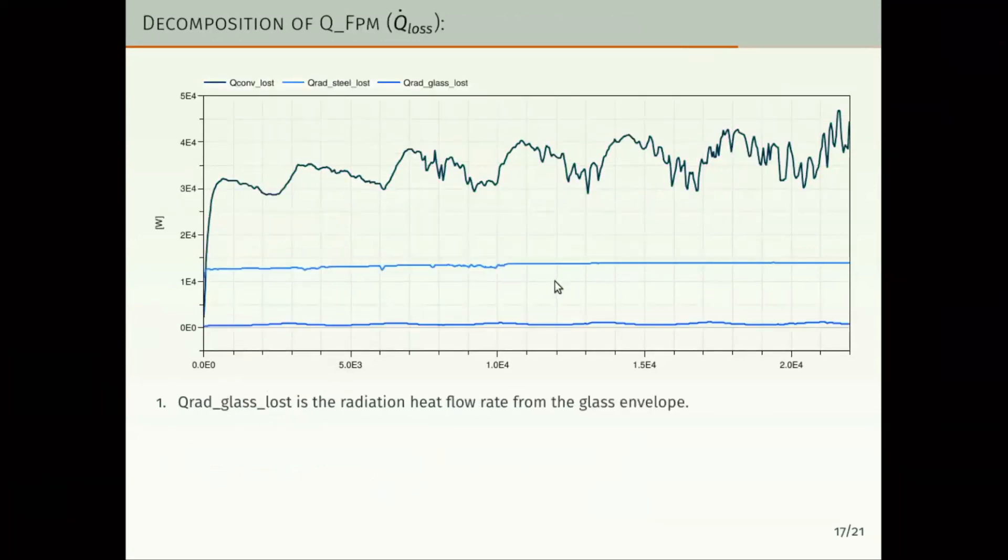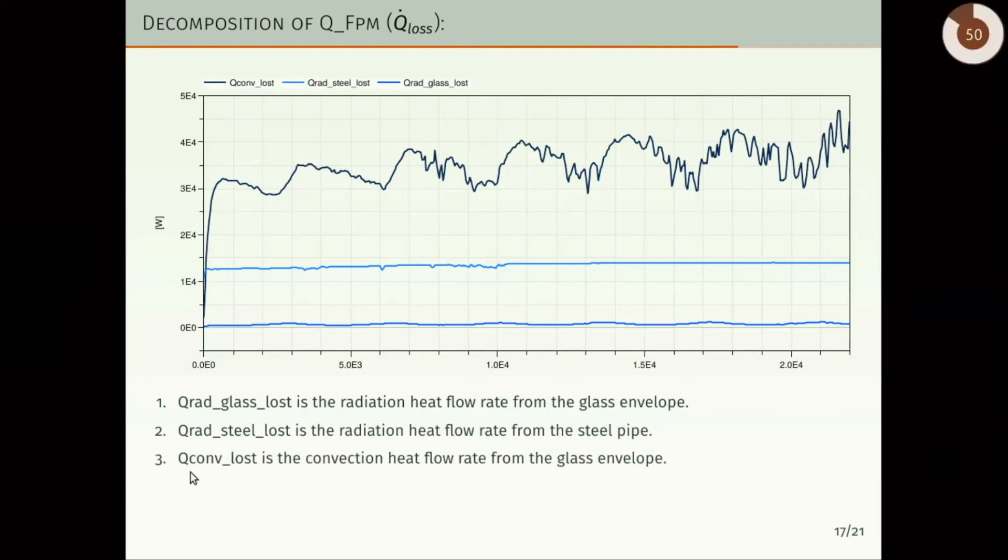In this other simulation we are presenting a decomposition of the heat losses of the first principle model in its three parts. The first one is the radiation heat flow rate from the glass envelope. The second one is the radiation heat flow rate from the steel pipe. And the third one is the convection heat flow rate from the glass envelope.